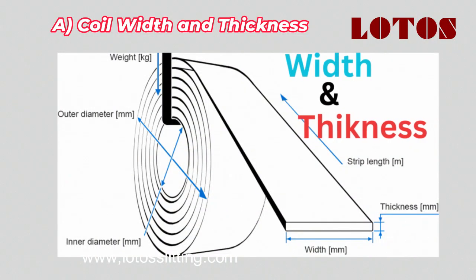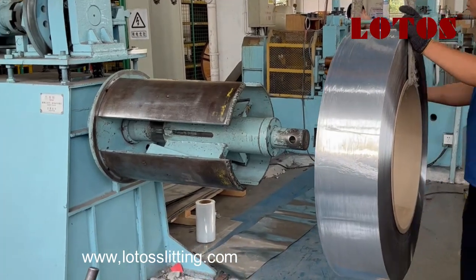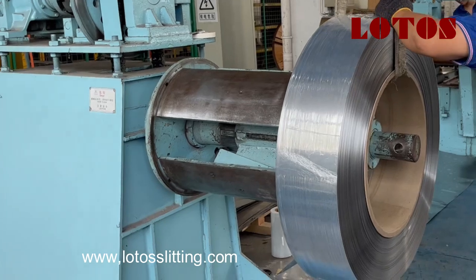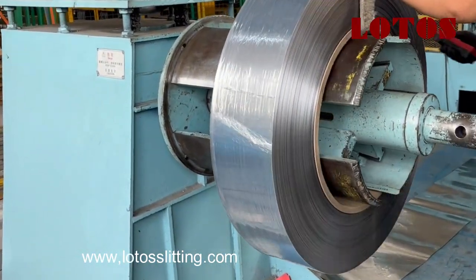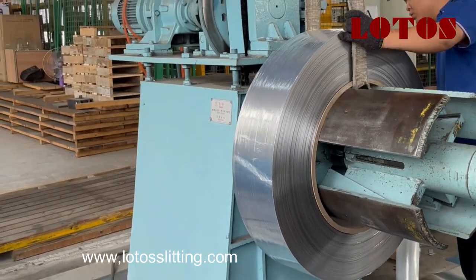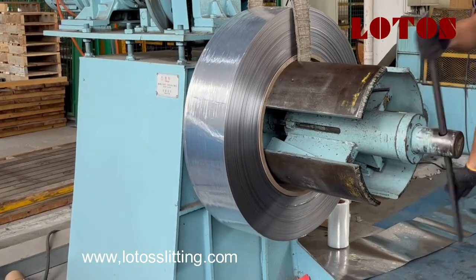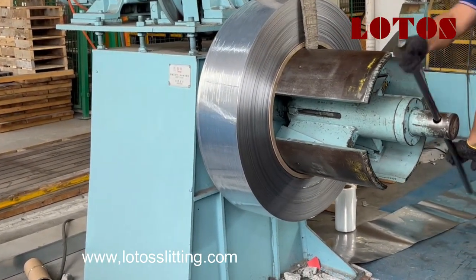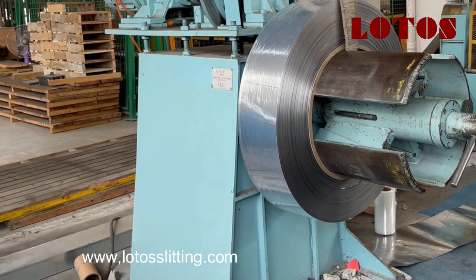A. Coil width and thickness. One of the most essential factors to consider when choosing a slitting machine is its capacity to handle a range of coil widths and thicknesses. The machine must accommodate the maximum and minimum widths of the steel coils you intend to process. Machines should support a wide range of coil widths, from narrow to wide, depending on your production requirements. The machine should also handle varying thicknesses, from very thin sheets of 0.2 mm upward.